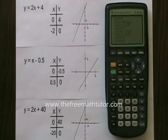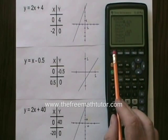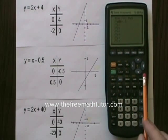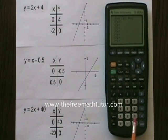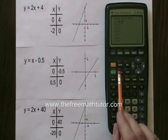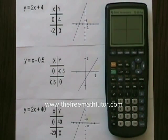Now let's try entering the third equation. I hit y equals. I hit clear to remove the second equation. And now I have to enter 2x plus 40. 2x plus 40. And I hit graph. And my graph doesn't show my line.